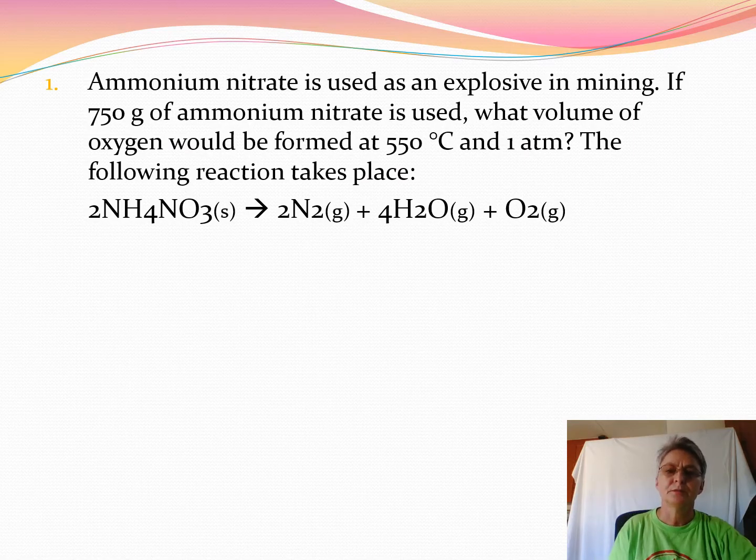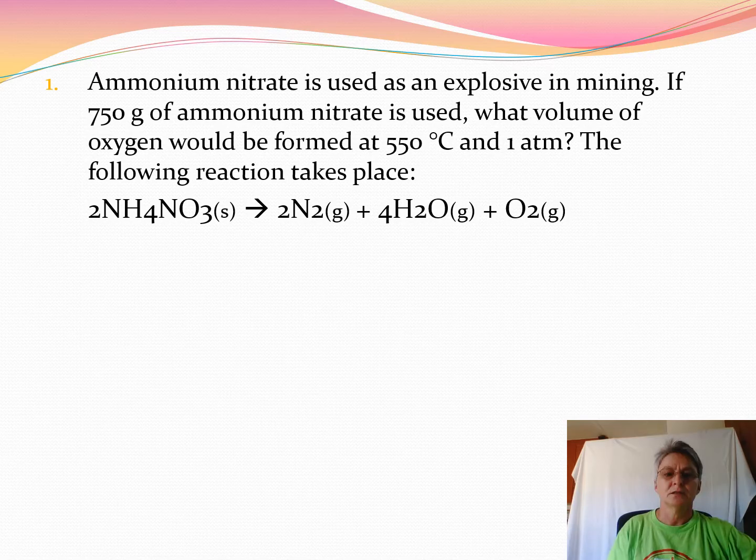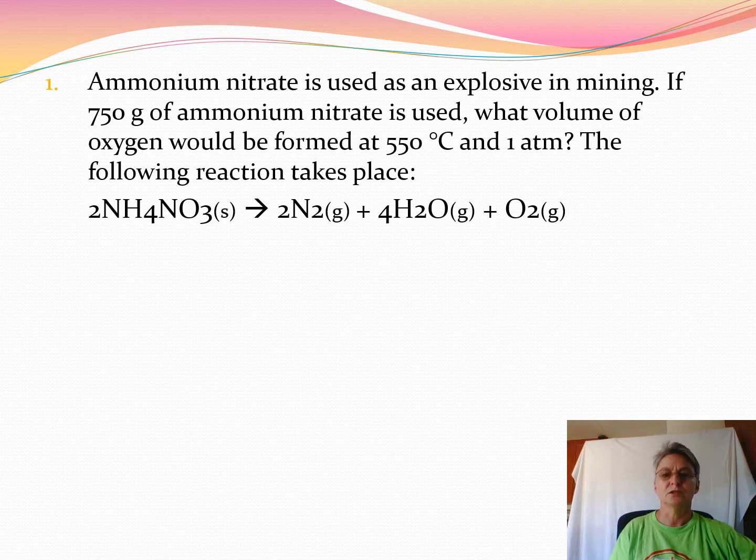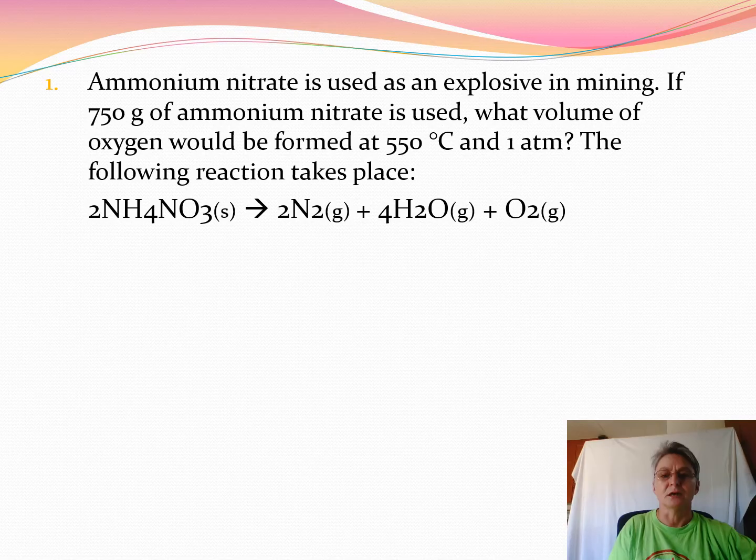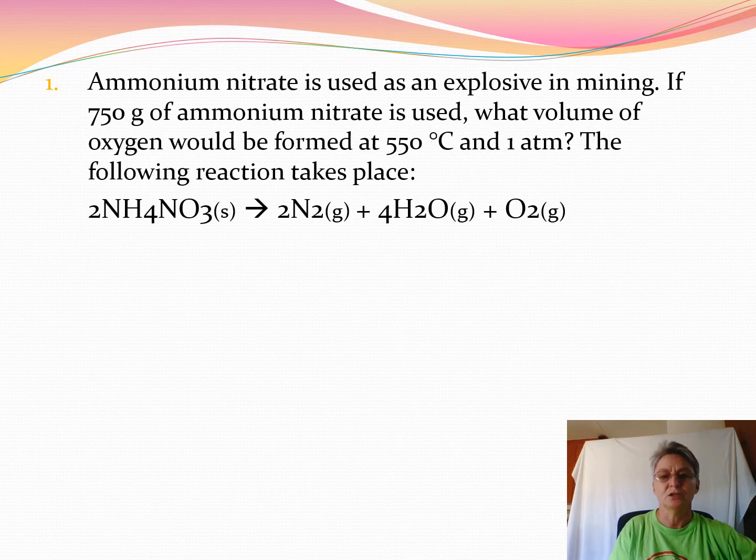Ammonium nitrate is used as an explosive in mining. If you have 750 grams of ammonium nitrate, what volume of oxygen would be formed at 550 degrees Celsius at a pressure of 1 atmosphere? So it seems like this reaction is not taking place under STP conditions.